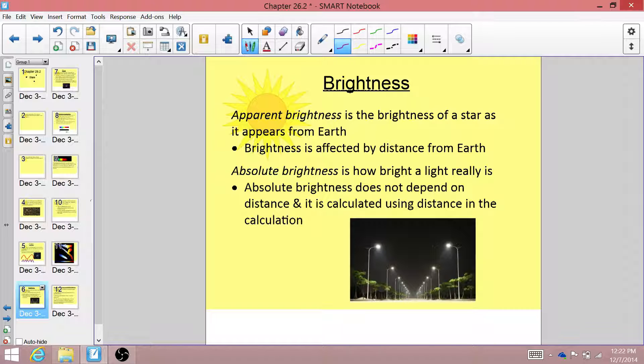But the streetlights way at the end of the row down here appear to be less bright than the nearest ones, and that's because of their proximity to us. So that would be the apparent brightness. This appears to be less bright than this, even though their absolute brightness is actually the same.